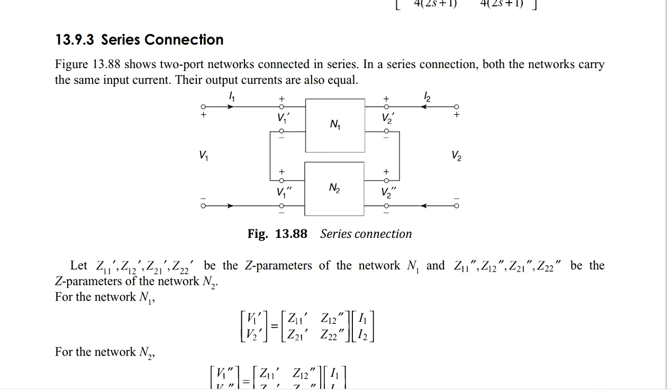Another network is also having similarly one input port and one output port. The first network is considered as N1, the second network is considered as N2. V1 prime, V1 double prime are the input port voltages for network 1 as well as network 2 respectively. Similarly we have V2 prime and V2 double prime.